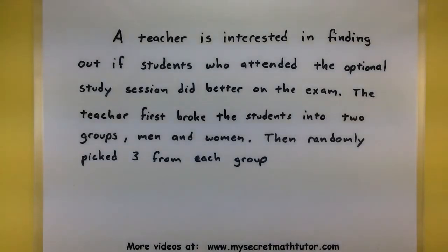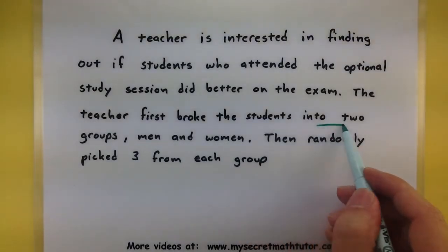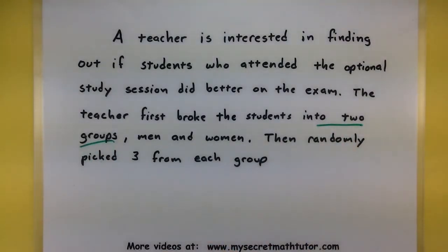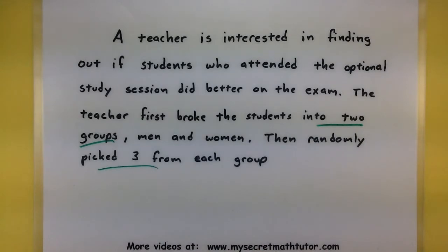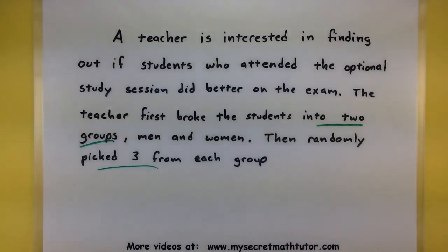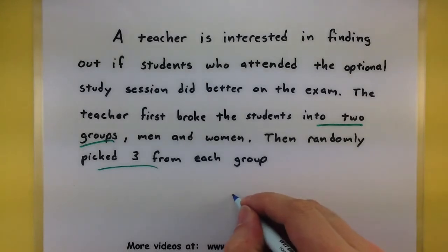Looking at the sampling here, the teacher first broke them into two groups — that's very important. Then, when it came to those two groups, the teacher really didn't care how big the groups were; they just randomly picked three from each of those groups. Since the teacher is splitting them into groups but not really caring how much they're taking from each group, this is an example of quota sampling.